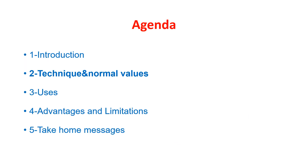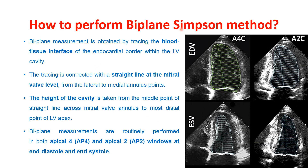How to perform the biplane Simpson method: the biplane measurement is obtained by tracing the blood-tissue interface of the endocardial border within the left ventricular cavity. The tracing is connected with a straight line at the mitral valve level from the lateral to medial mitral annulus point. The height of the cavity is taken from the middle point of the straight line across the mitral valve annulus to the most distal point of the left ventricular apex, as shown here.